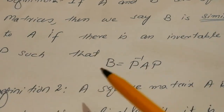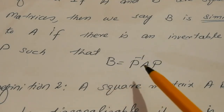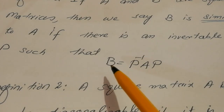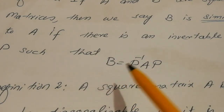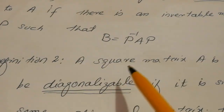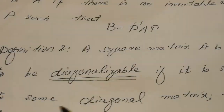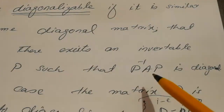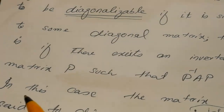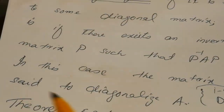Using the same concept, we say that a matrix is diagonalizable if a matrix A is similar to a matrix D which is itself a diagonal matrix. The formal definition is: a square matrix A is said to be diagonalizable if there exists an invertible matrix P such that P inverse AP is diagonal. In this case, the matrix P is said to diagonalize A.